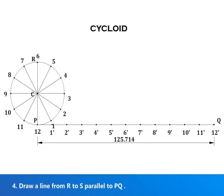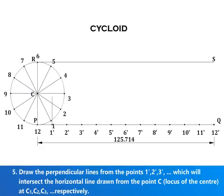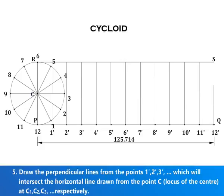Draw a line from R to S parallel to PQ. Draw the perpendicular lines from the points 1', 2', 3', etc., which will intersect the horizontal line drawn from the point C at C1, C2, C3, respectively.